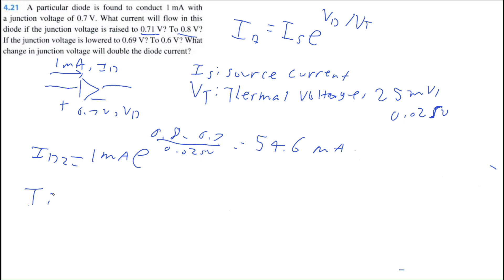Okay, let's let ID3. ID3 be for the 0.69 volts. You can probably already guess again. It's 1 milliamp times E to the power of 0.69 minus 0.7 divided by 0.025. That is equal to 0.67 milliamps. So a little bit less than the original 1 milliamp.